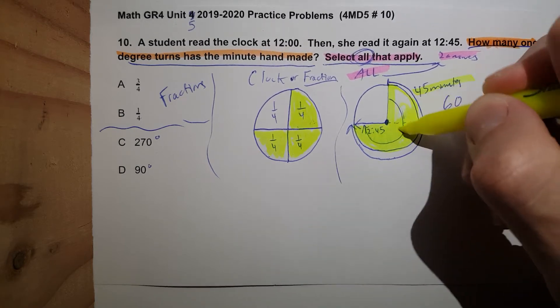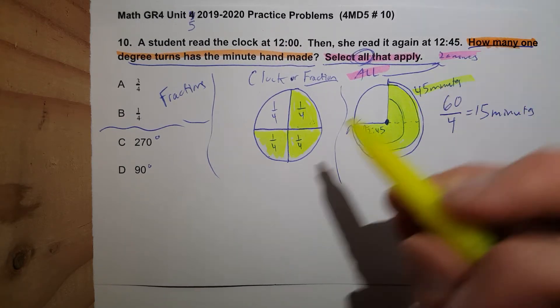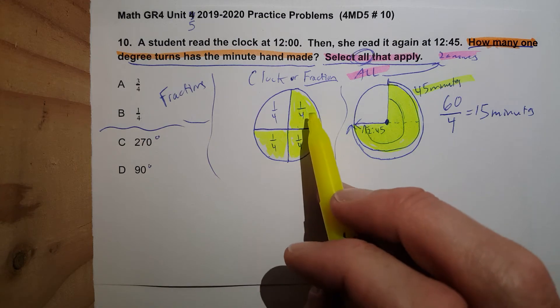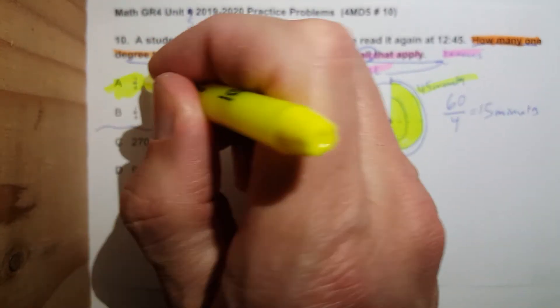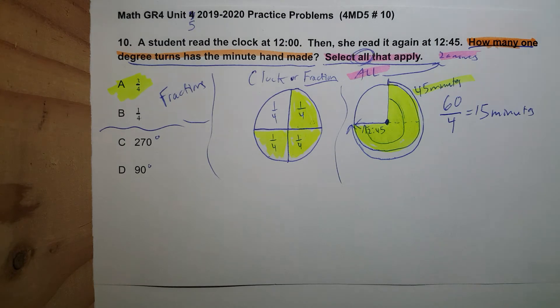See, all those are exactly the same. So there's no way it's one fourth. One fourth, one plus one plus one is three fourths. Answer. The other one that we need to do is degrees.